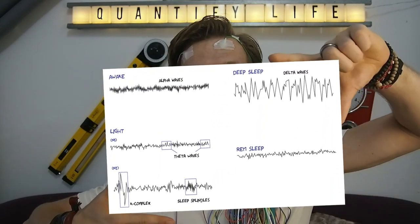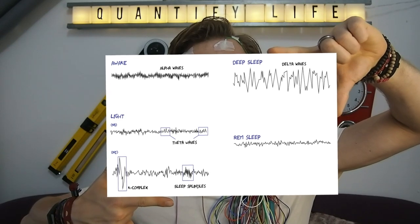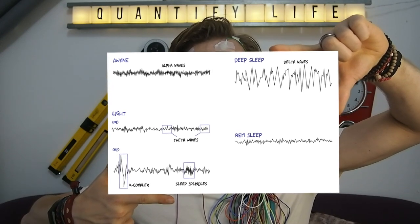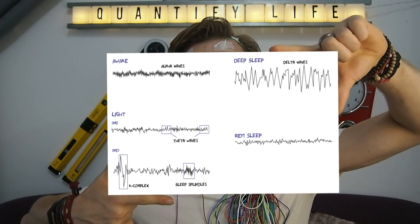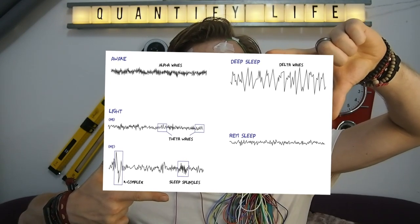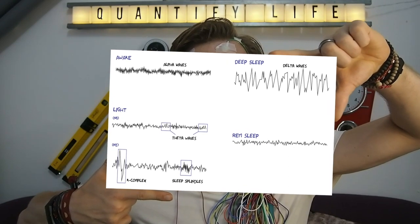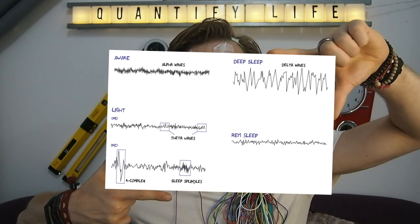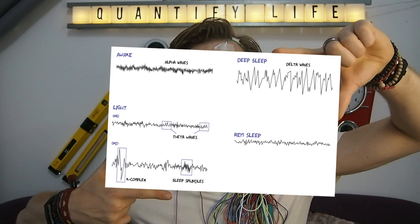So here are the different brainwave patterns. The most extreme difference you can see is between being awake and being in deep sleep. When you're awake and relaxed you mainly produce alpha waves, which are very high in frequency but not so intense. Whereas during deep sleep you have very slow, high-intensity waves. In addition to brain activity, the EEG monitor can also pick up on muscle movement — for instance, the electrode near my eye helps it pick up on rapid eye movement — and it can also detect heart rate.